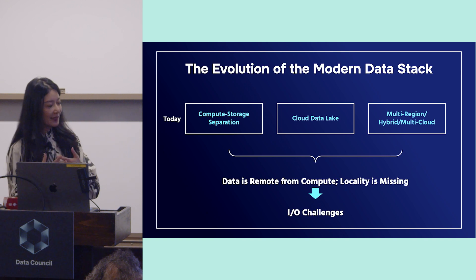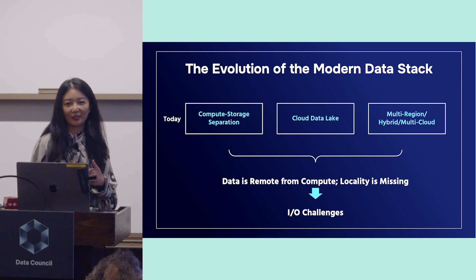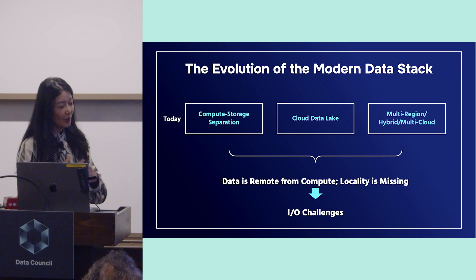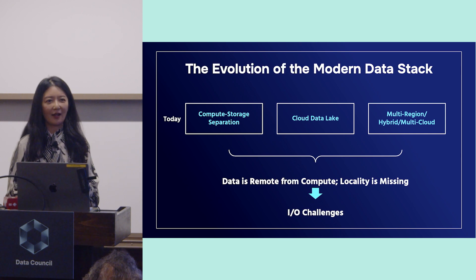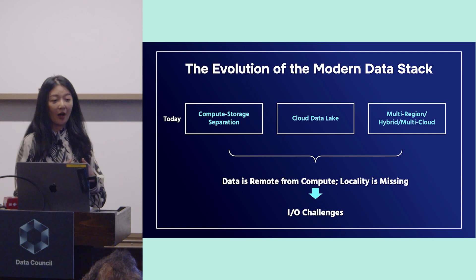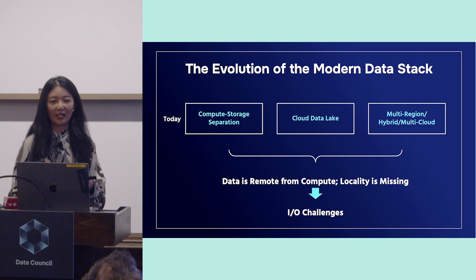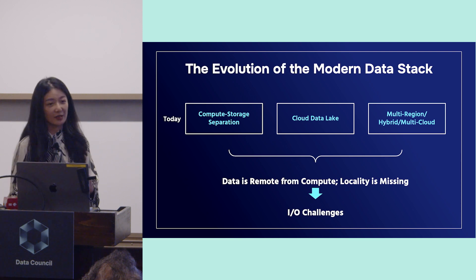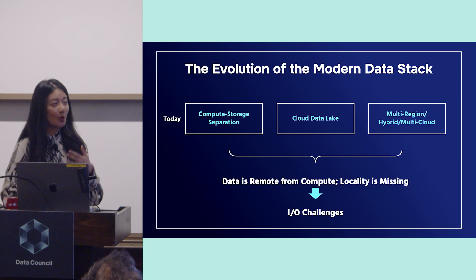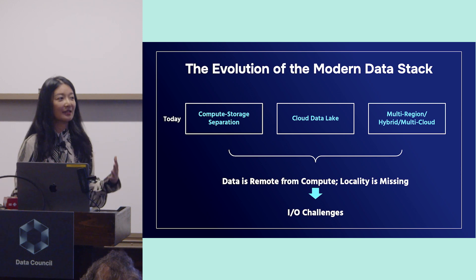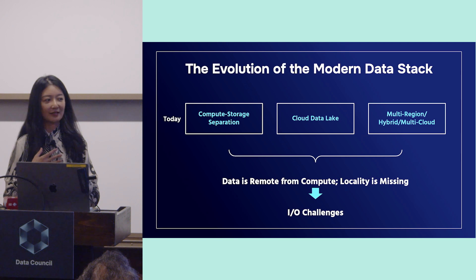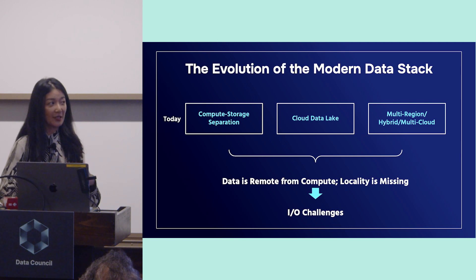However, this brings a lot of I/O challenges. Data has to travel from your storage site to your compute site through the network. Think about Amazon S3 and EC2 — even in the same region, data still travels over the network. And consider the concept of data locality, which used to be a design principle in Hadoop with coupled compute and storage. Now, locality is no longer part of the design concept.